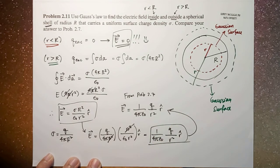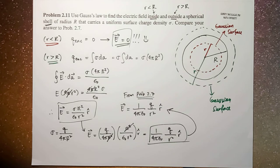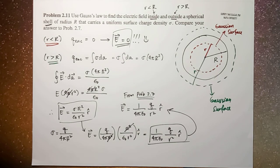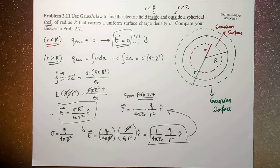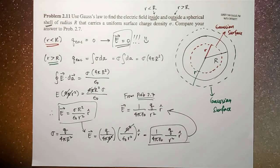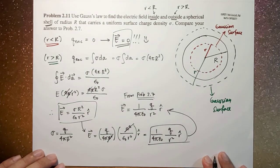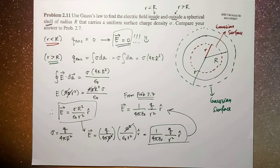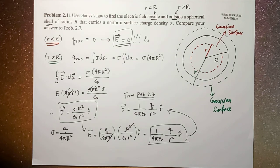You end up with 1 over 4 pi epsilon naught times q over r squared r-hat, which is the same as your result in problem 2.7. But you'll notice that when you solve for the electric field in problem 2.7 using Coulomb's law, the integral involved is very, very difficult. Using Gauss's law, things are much easier. So that's the simple solution to problem 2.11. Thank you for watching — I hope you learned something today, and I'll see you guys in the next video. Bye-bye!